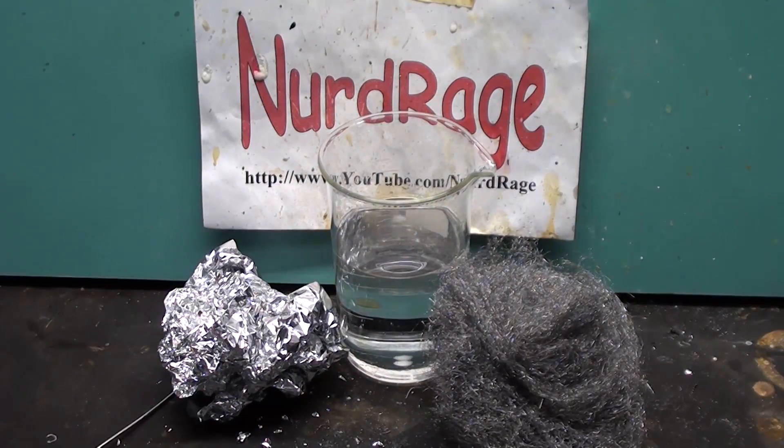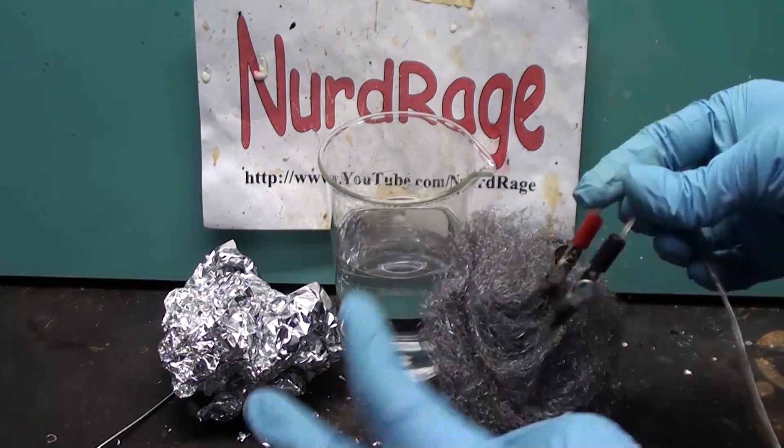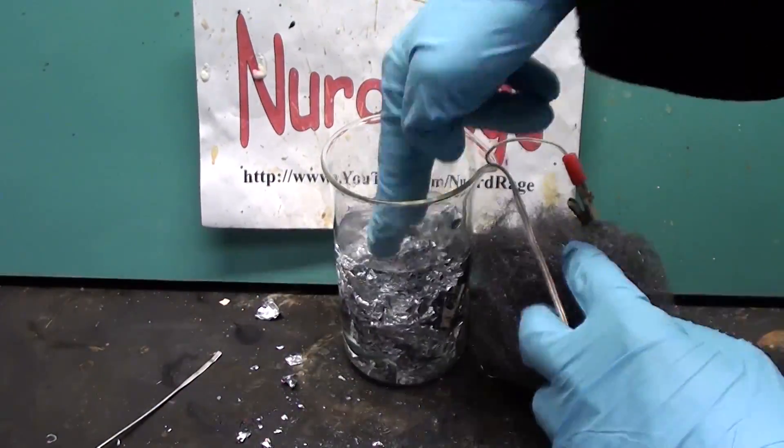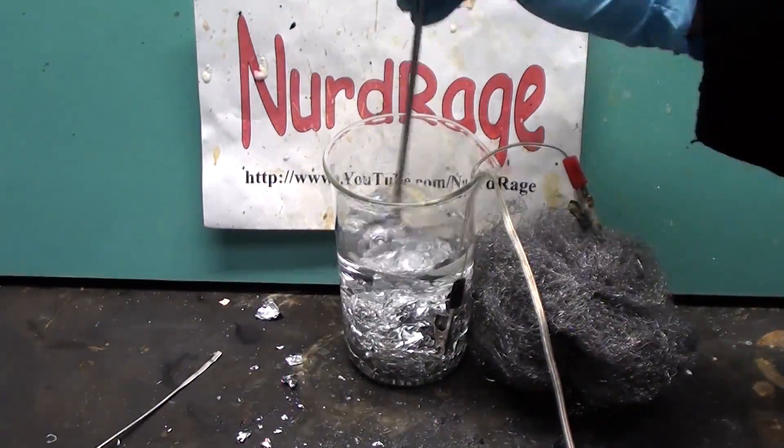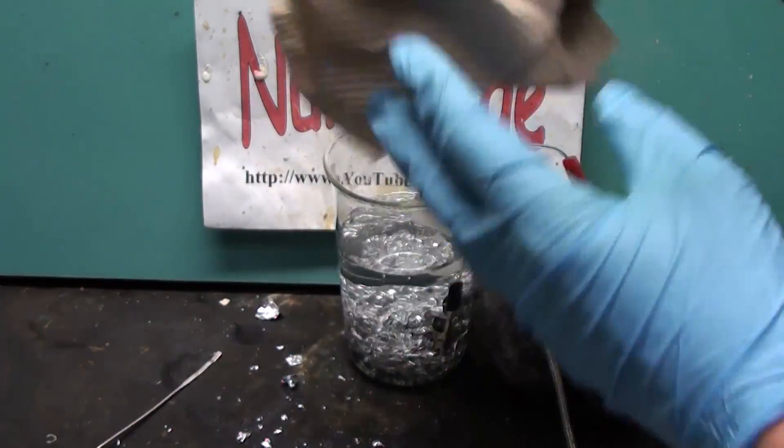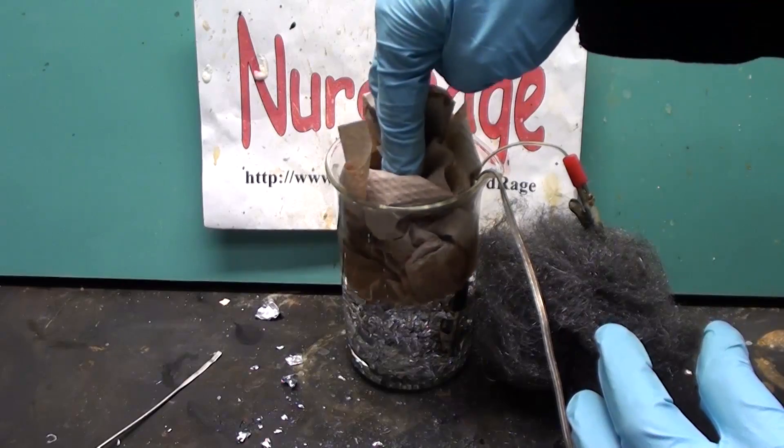Now get some wires with alligator clips and attach them to each electrode material. Now stuff the aluminum into the bottom of the salt water and pack it down. Next get a paper towel and lay it over the aluminum. This will serve as a separator between the electrodes.